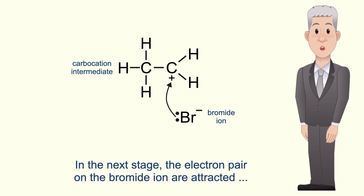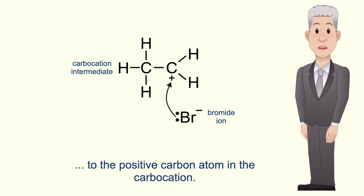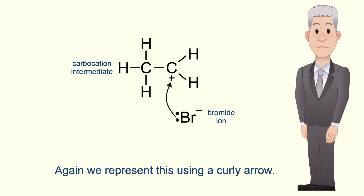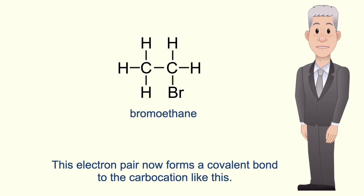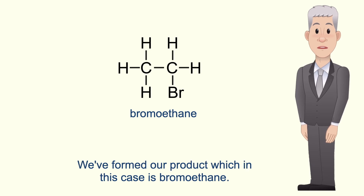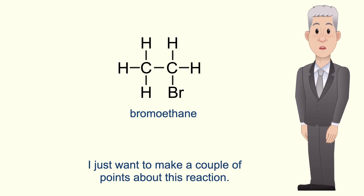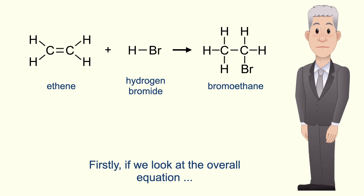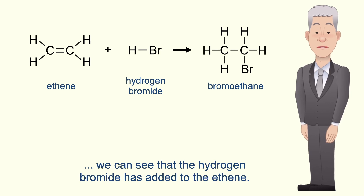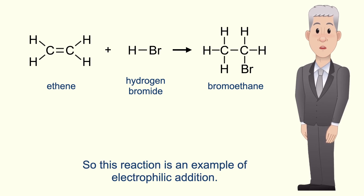In the next stage, the electron pair on the bromide ion is attracted to the positive carbon atom in the carbocation, and again we represent this using a curly arrow. This electron pair now forms a covalent bond to the carbocation, and we've formed our product, which in this case is bromoethane. If we look at the overall equation, we can see that the hydrogen bromide has added to the ethene, so this reaction is an example of electrophilic addition.